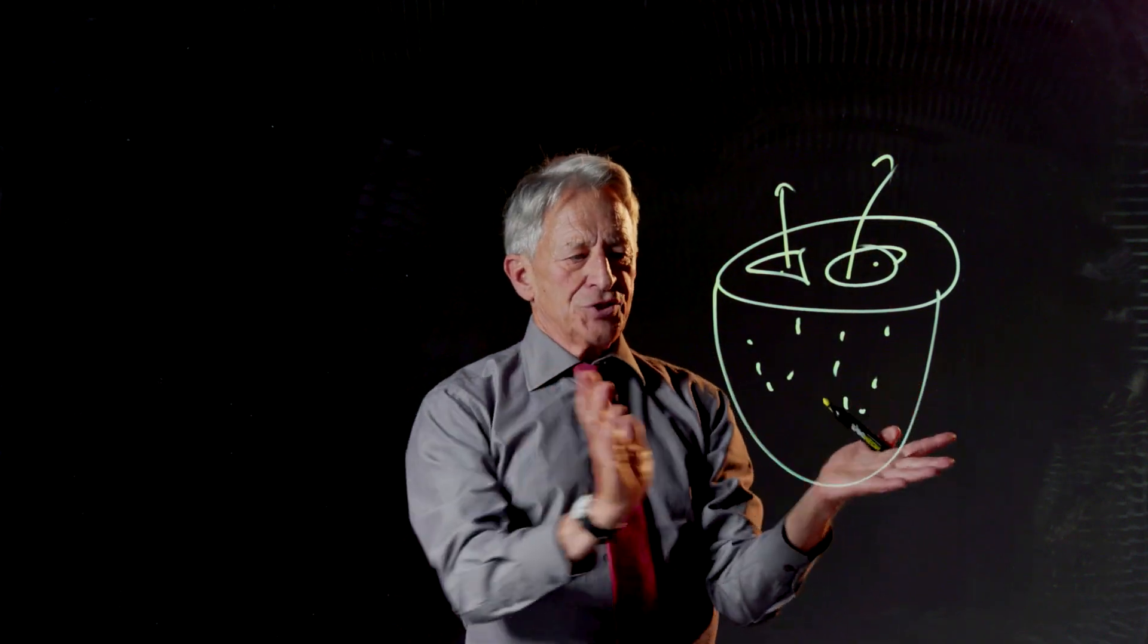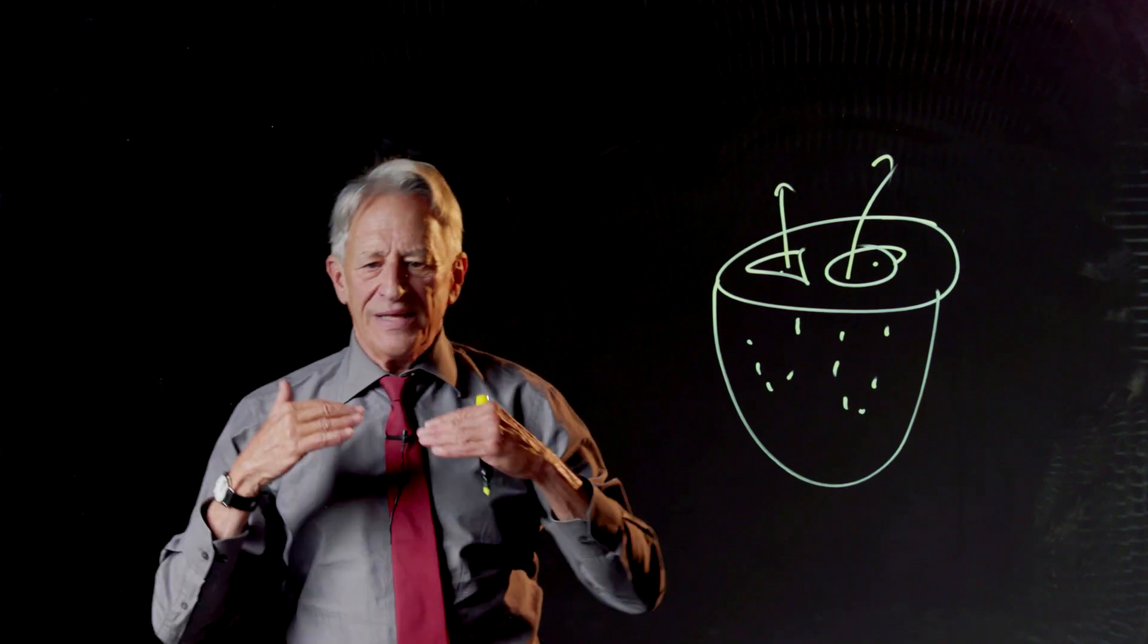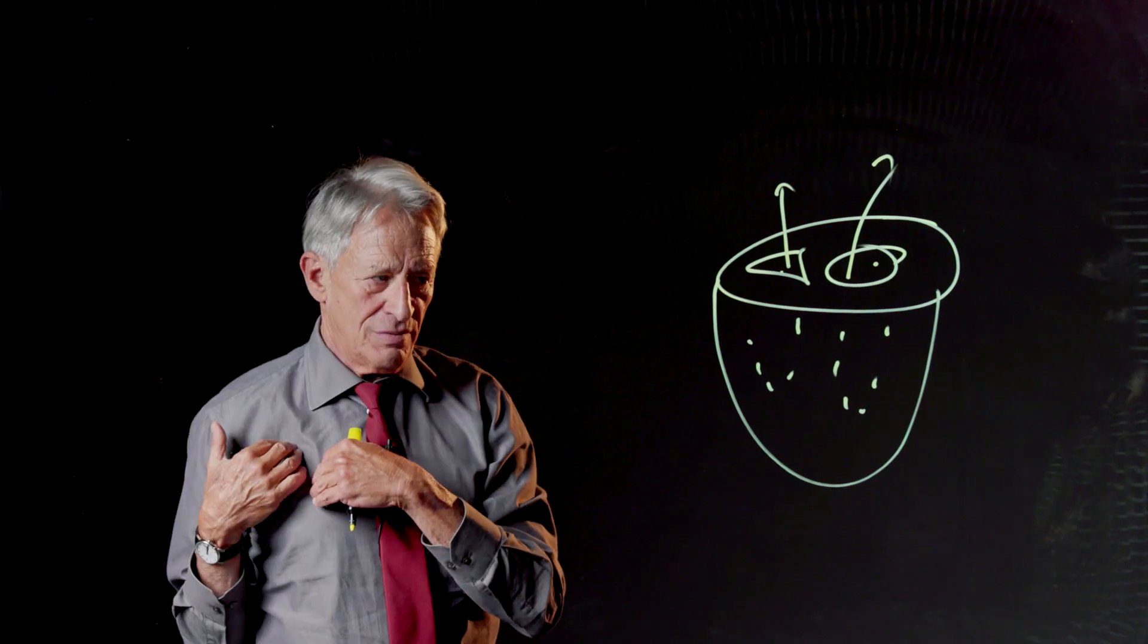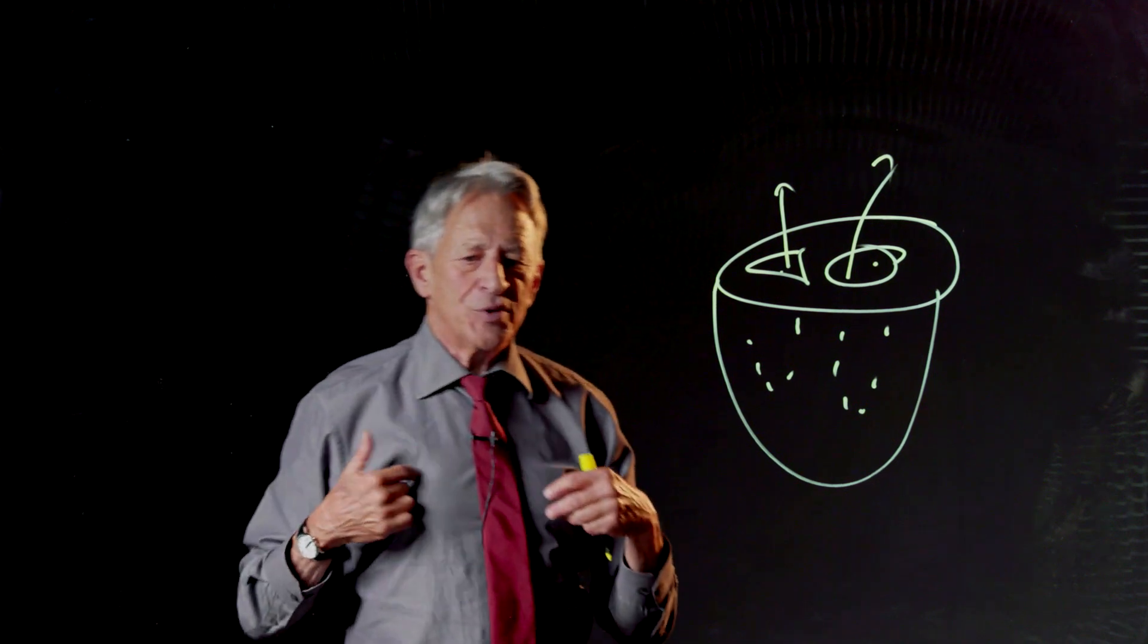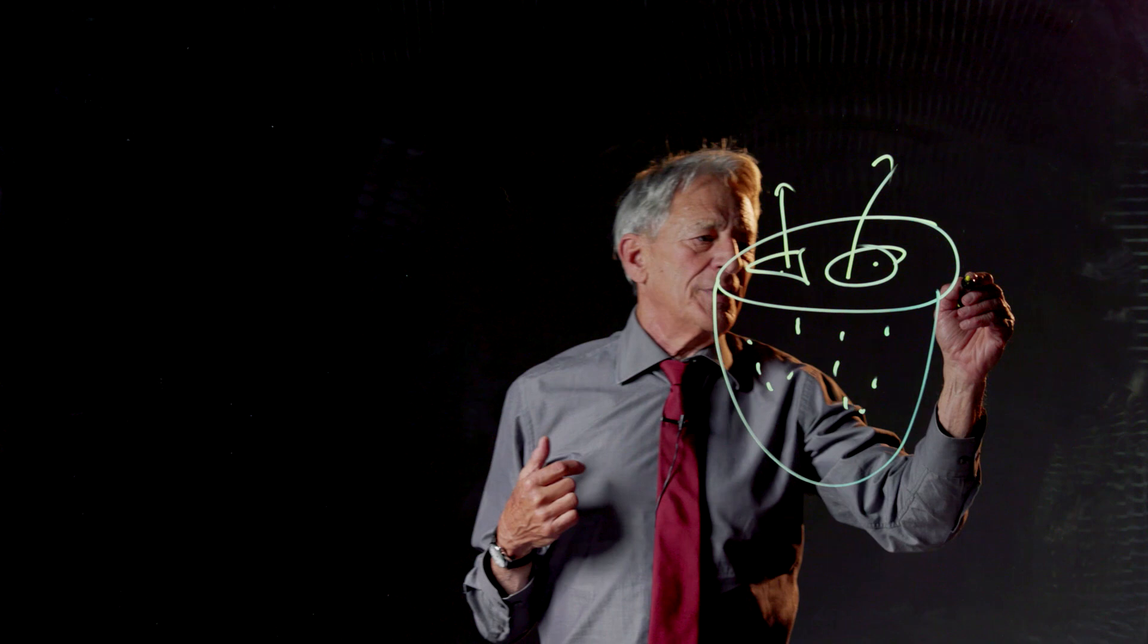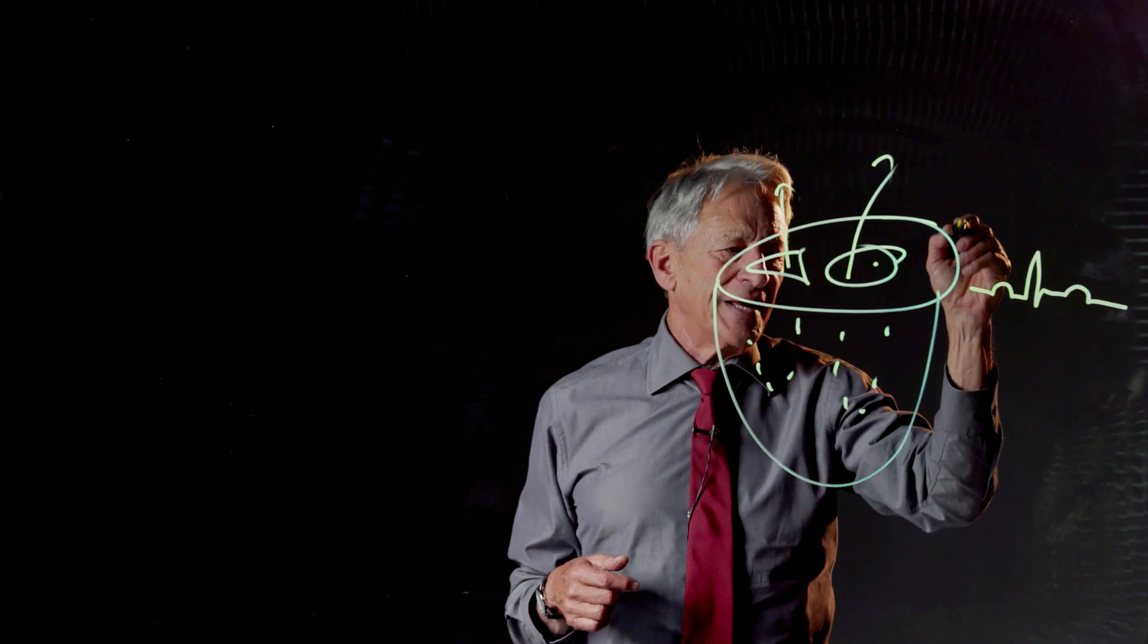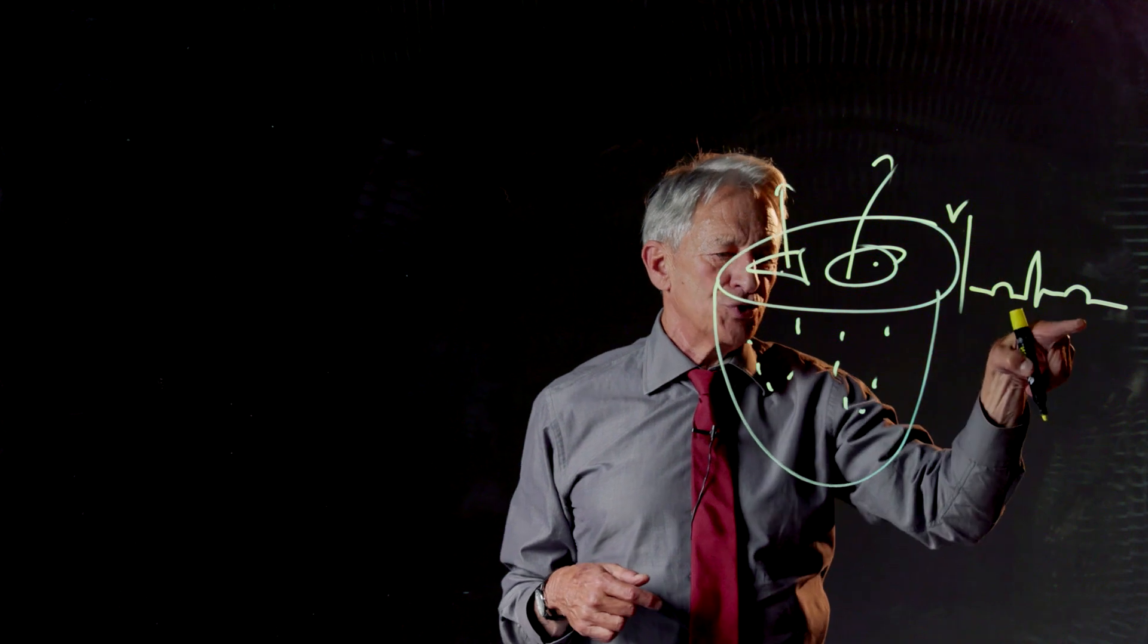And the contraction happens because there's a previous wave of electrical activation of the cells. That's what you pick up on an electrocardiogram. And so, the electrocardiogram is picking up the electrical activity. That's a voltage reading.